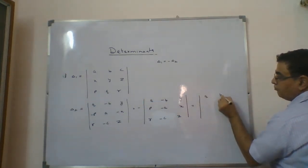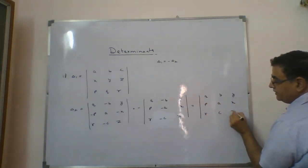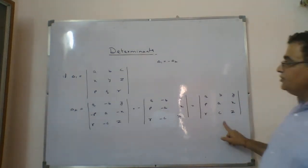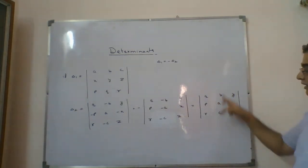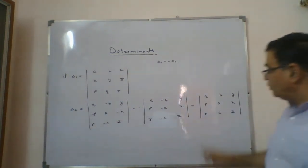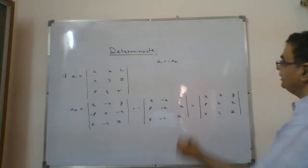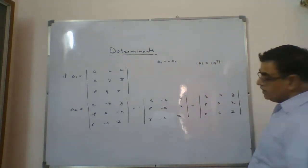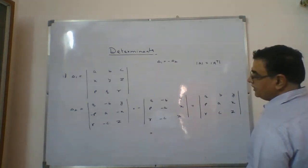Taking minus common from column 2, minus times minus becomes plus, and what is left is: q, b, y; p, a, x; r, c, z. Now comparing with delta 1 — a, b, c is in a row here but a column there; x, y, z is in a row here but a column there. So we apply the transpose property: det(A) = det(A^T), converting rows to columns and columns to rows.